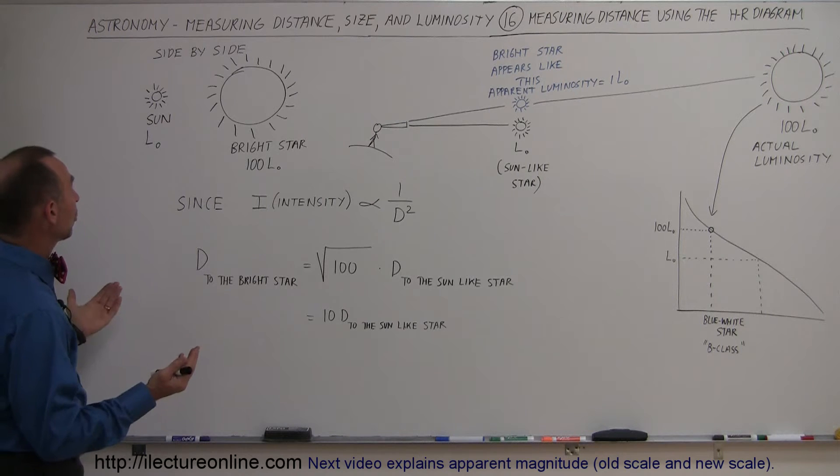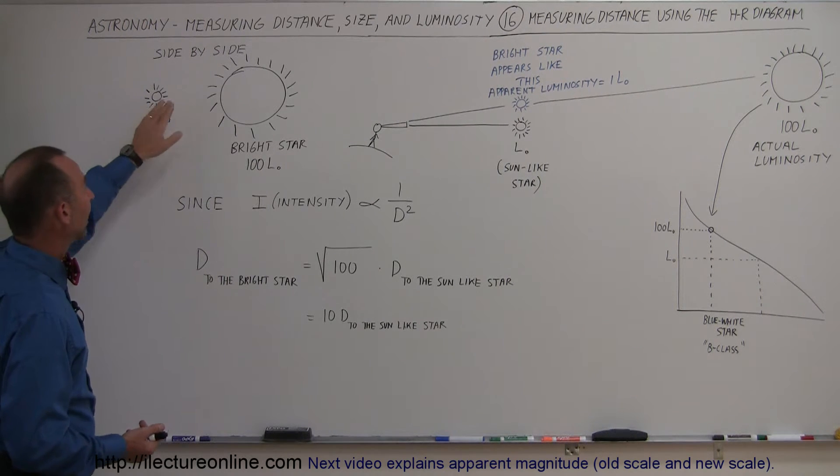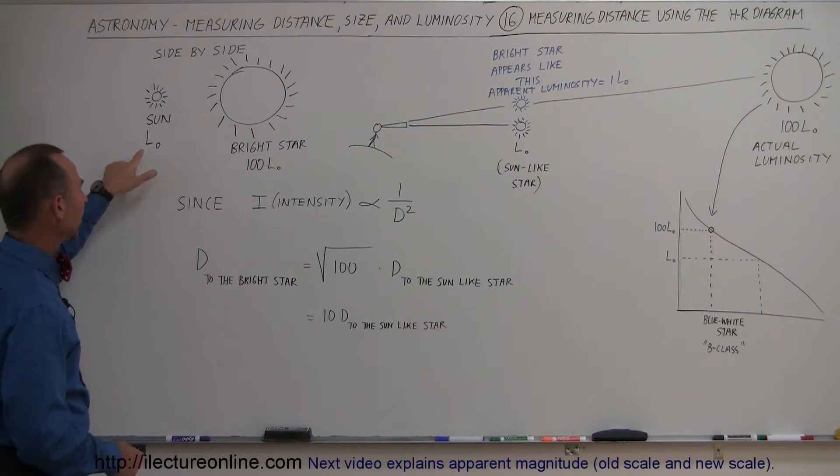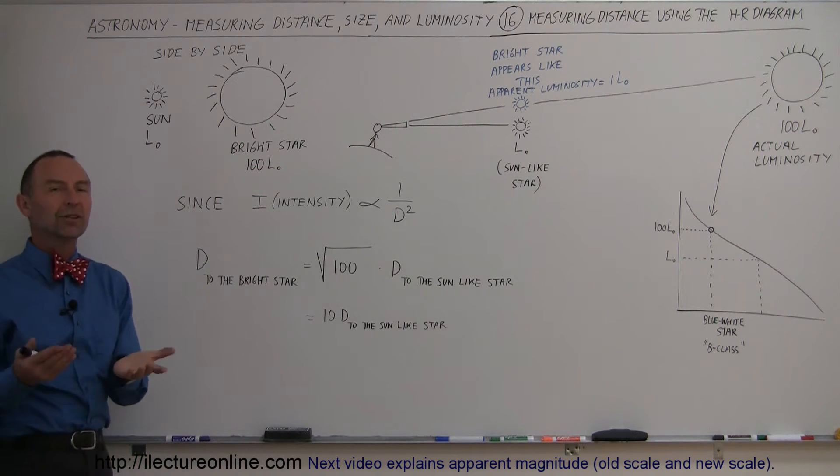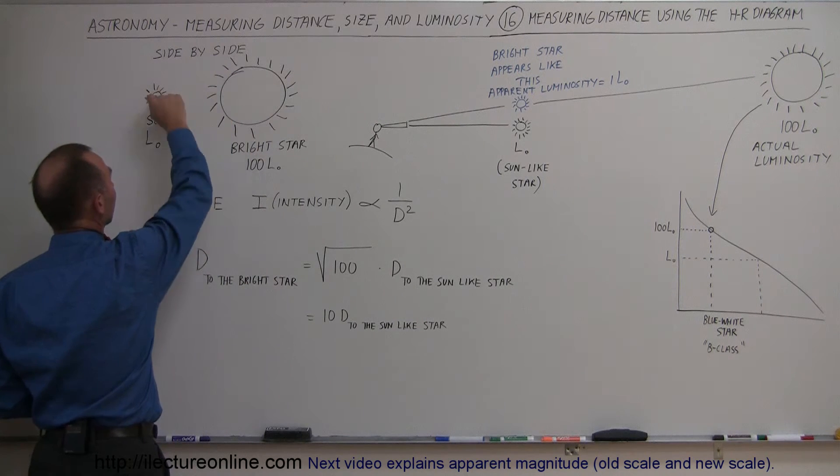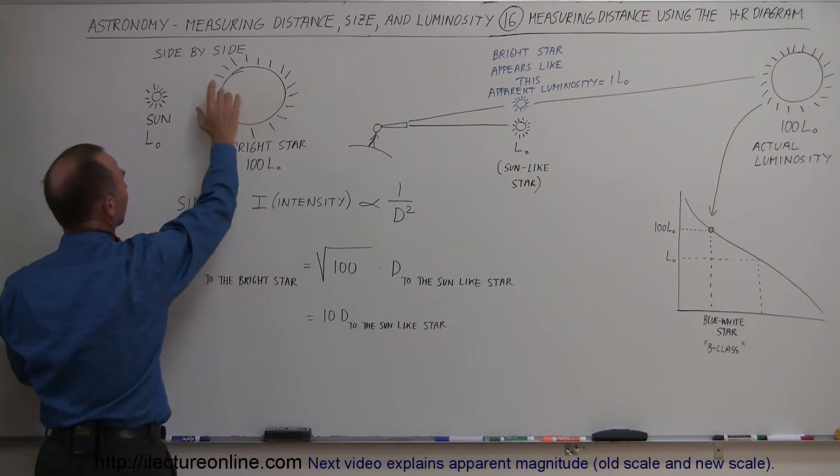So let's say we have two stars, a sun-like star, or something like the sun, and a much brighter star, something that's 100 times brighter than the sun. Usually L-sub-naught simply means the luminosity of the sun, so in comparison, this star would put out 100 times as much light as this star. If they were placed side-by-side, this one would look 100 times brighter than this one.